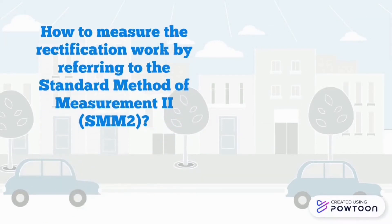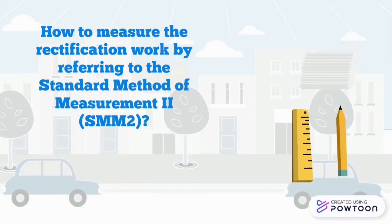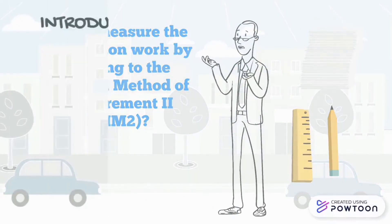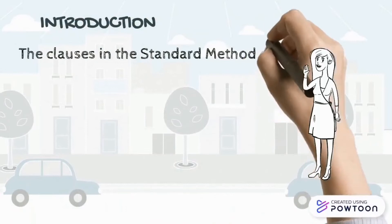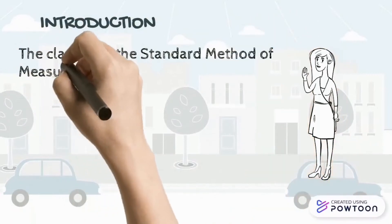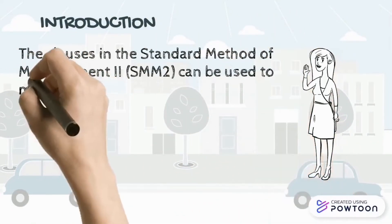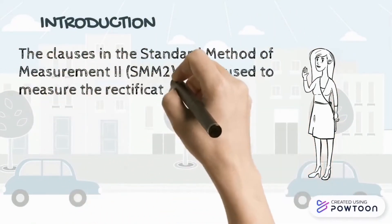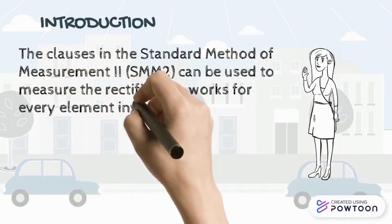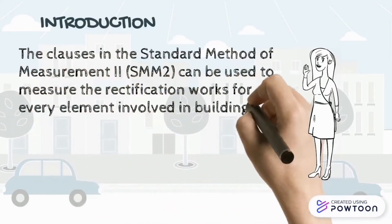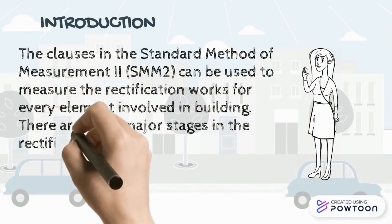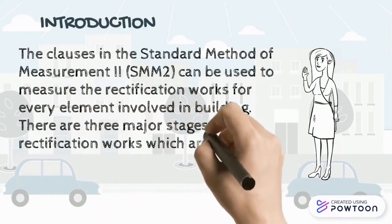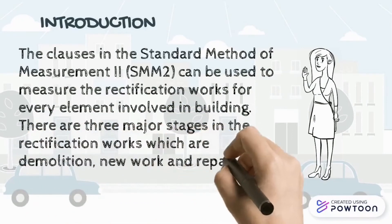How to measure the rectification work by referring to the Standard Method of Measurement 2 (SMM2). The clauses in SMM2 can be used to measure the rectification works for every element involved in a building. There are three major stages in the rectification works: demolition, new work, and repair work.